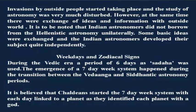Siddhantic astronomy matured in the 4th-5th century AD. The first major famous astronomer of the Siddhantic period was Aryabhatta I - there are two Aryabhattas, so the earlier and more famous one is called Aryabhatta I, and the later one is Aryabhatta II. We find the first occurrence of weekdays and the names of the zodiacal signs in this period.